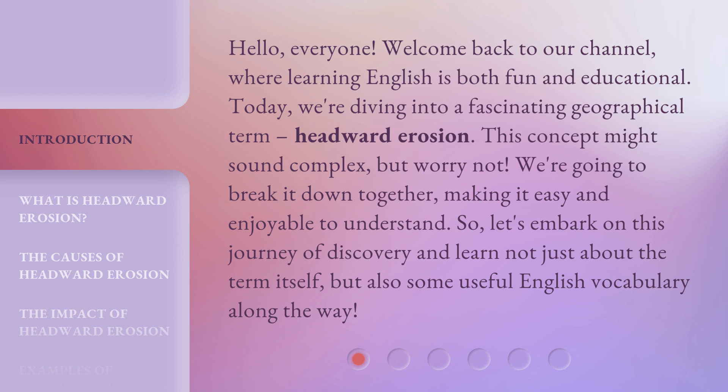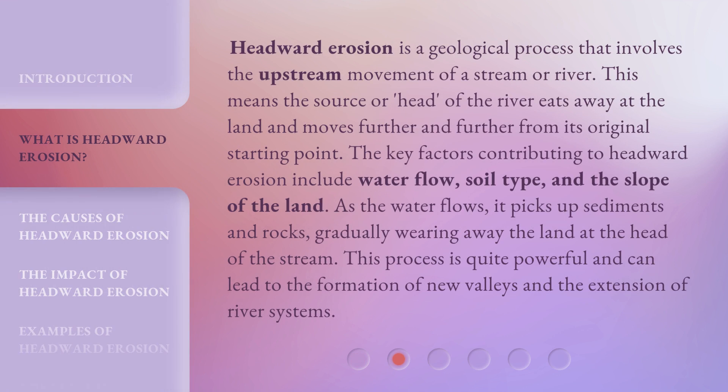So, let's embark on this journey of discovery and learn not just about the term itself, but also some useful English vocabulary along the way. Headward erosion is a geological process that involves the upstream movement of a stream or river. This means the source or head of the river eats away at the land and moves further and further from its original starting point.